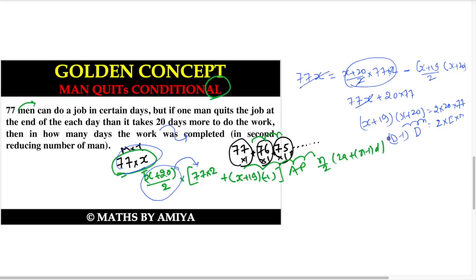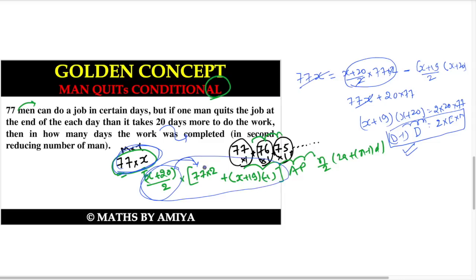With a gap of 2, you can use this formula very easily — most questions will look like this. For our problem, 2 × 20 × 77 = 3080, and √3080 ≈ 55 point something, so d = 56 for the reducing case. If the question changes — for example, one man leaves at the end of each week — I would suggest creating the AP equation, solving for x, and then getting the answer.